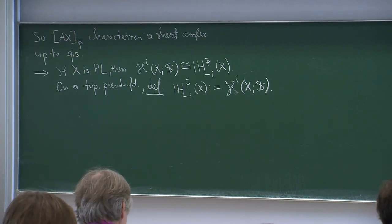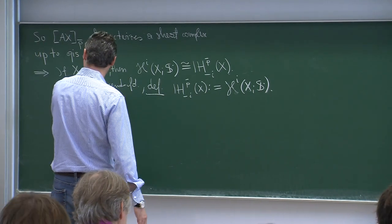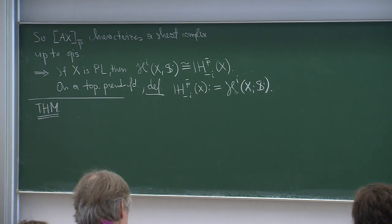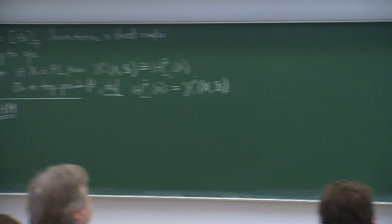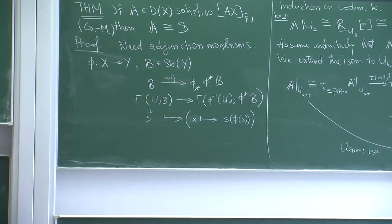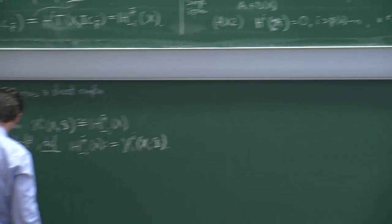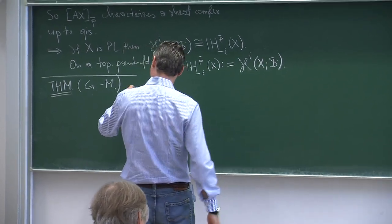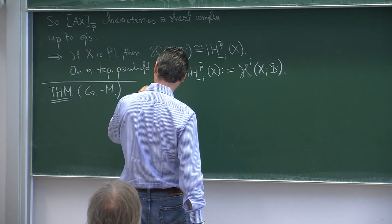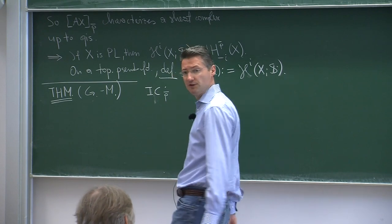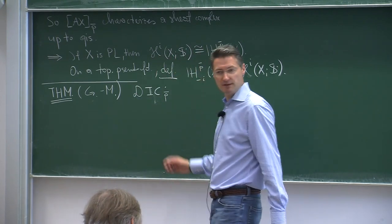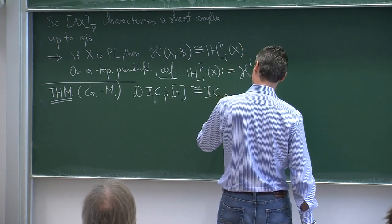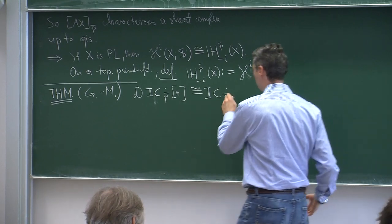Now I want to apply all of this to proving Poincaré duality. The next theorem — these are all theorems of Goresky and MacPherson — is the following: the dual of IC_P, the IC sheaf for perversity P, with a shift, is isomorphic to IC_Q, where P and Q are complementary perversities. So let's prove this. The Verdier duality functor D interchanges — more precisely, D interchanges Axiom 2 for P and Axiom 3 for Q. That's the basic observation, which a little calculation verifies.